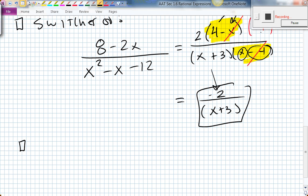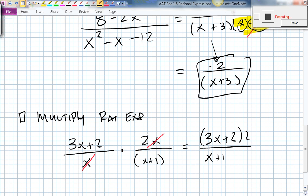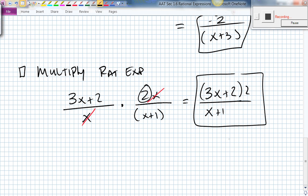So when you multiply rational expressions, you do the same thing you would do with fractions. If I had 3x plus 2 all divided by x times 2x all divided by x plus 1, well, since I'm multiplying here, any terms that create a factor of 1 can be canceled out. So I have 3x plus 2 all divided by x plus 1, times 2 on the top from this piece. You can leave it like that, or you can multiply it in, but you can leave it in factored form.